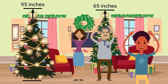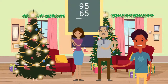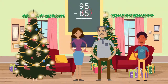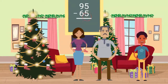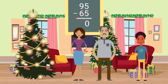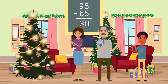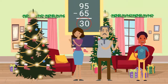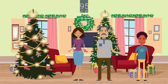We are going to subtract. Let's figure out the answer. 5 minus 5 is 0. 9 minus 6 is 3. The answer is 30. The new tree is 30 inches longer than the old one.